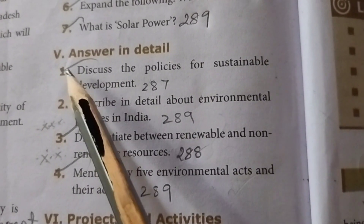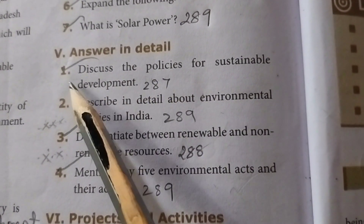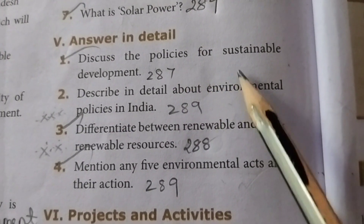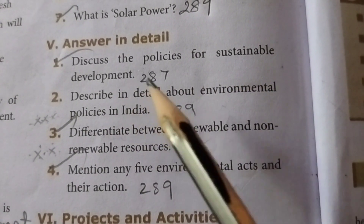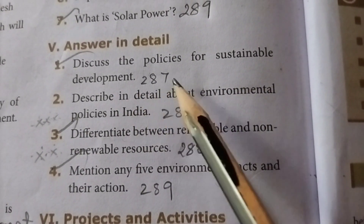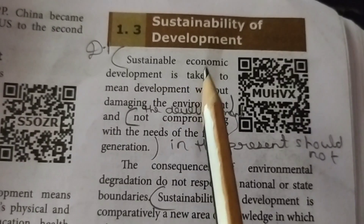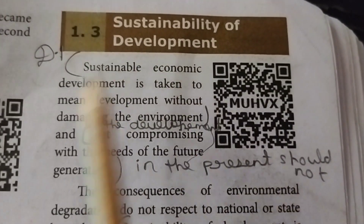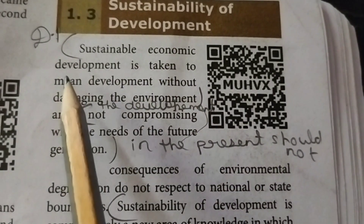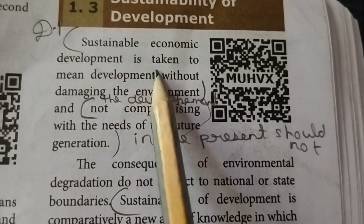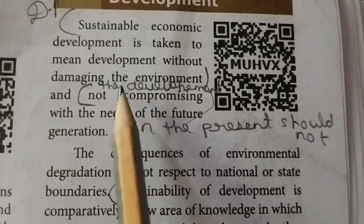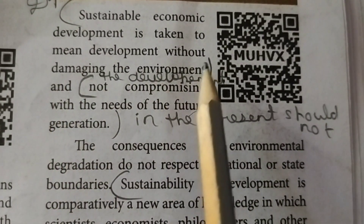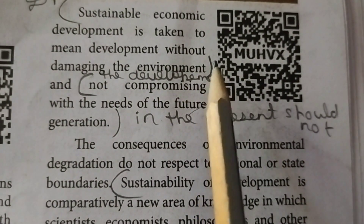Roman numeral V, Answer in Detail. First one: discuss the policies for sustainable development. (Page number 287.) Sustainability of development: sustainable economic development is taken to mean development without damaging the environment.